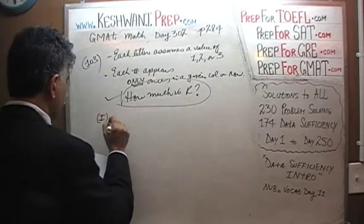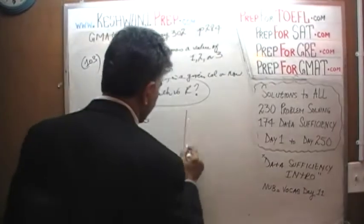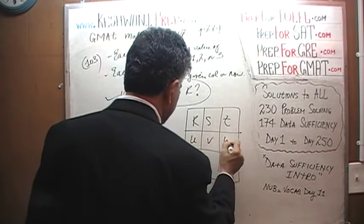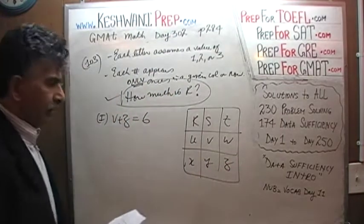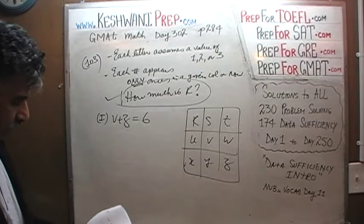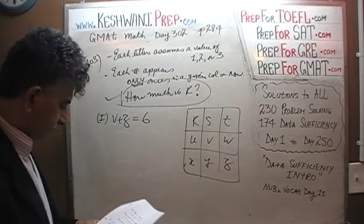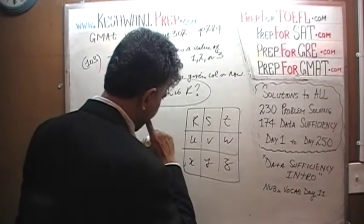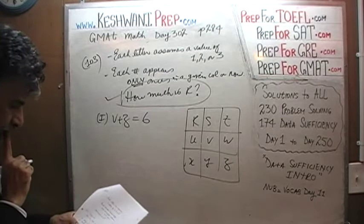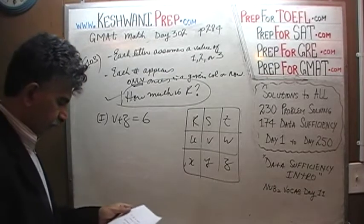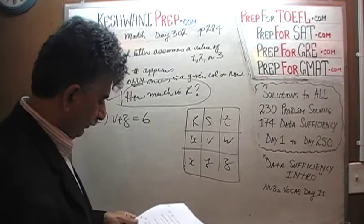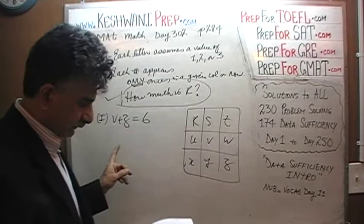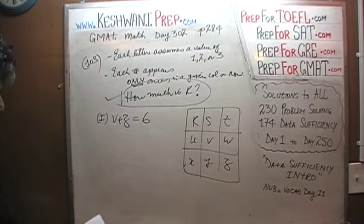The first statement tells us that V plus Z equals 6. Here is what is given to us: R, S, T, U, V, W, X, Y, and Z arranged in a 3×3 grid. V plus Z equals 6. Where is V? There is V, and there is Z. Now, their sum cannot be 0 plus 6 because 6 is not allowed.